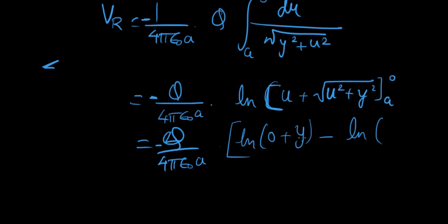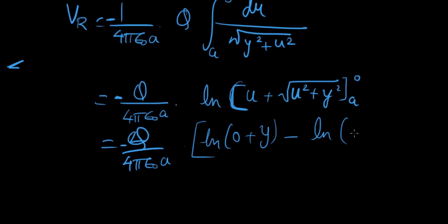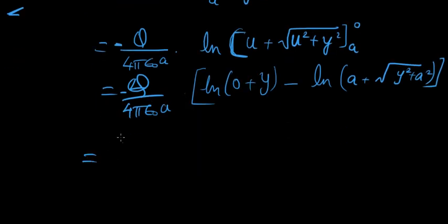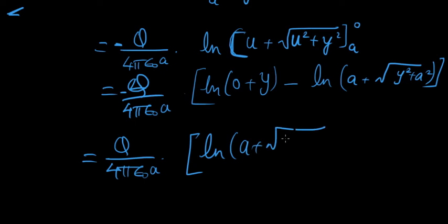Okay, so there's a minus sign here. Let's not forget that. And here, what do you get? We get A plus root of y squared plus A squared. That's the limits there. So when you put this minus inside, we can make this positive and this negative. Let's do that in the next step. q over 4 pi epsilon naught A and you're going to get natural log of A plus y squared plus A squared minus natural log of y.